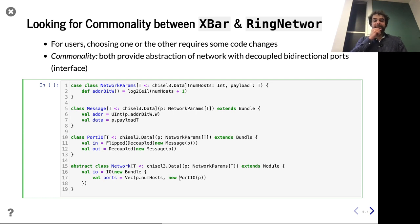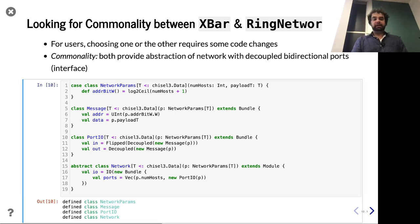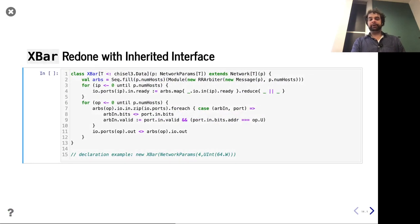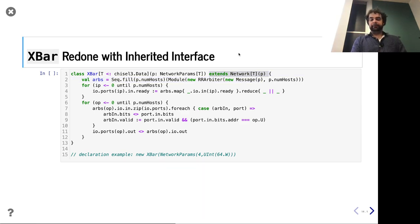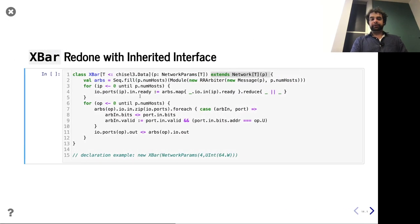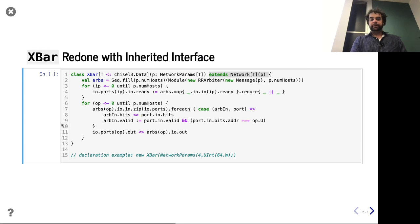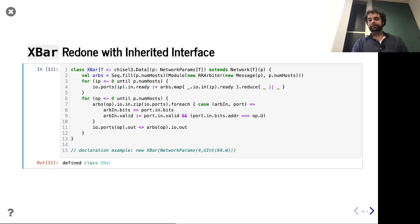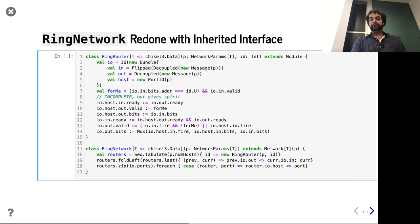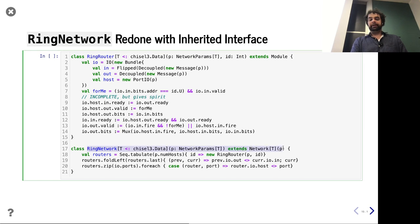We can go ahead and make an abstract class for a network. Our abstract class for the network uses all these things — it takes in these network parameters, sets the IO, and the IO is of course a port per host. With this foundation, we can start modifying our crossbar and our ring. For example, the crossbar can now just say it's extending this network. As a result, we get a lot of their stuff for free. And the rest of the internals of the crossbar are kind of the same as before. When it comes to instantiating, we can still say crossbar and call it like this.